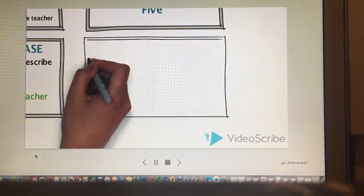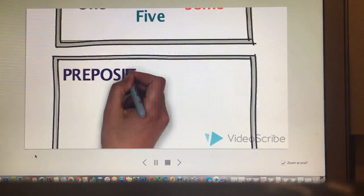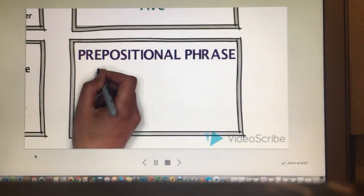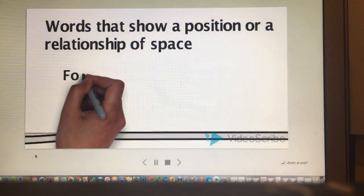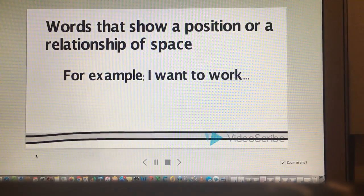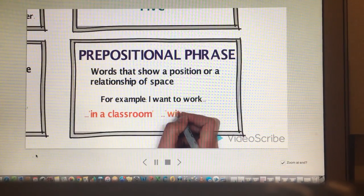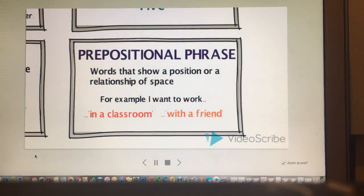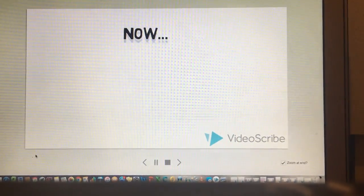Lastly, prepositional phrases are words that show a position or a relationship of space. For example, I want to work in a classroom or with a friend. These are phrases that start with a preposition. They describe where and with whom the individual wants to work.